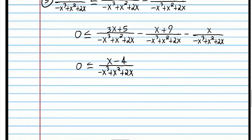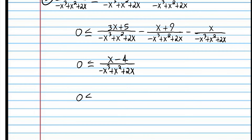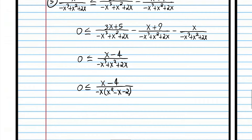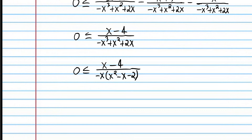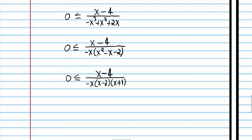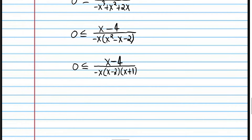That was step two — we combined everything to one fraction. Now let's go to step three: we're going to factor out negative x, and we have x squared minus x minus 2 to factor. We factor the GCF — the negative x — and then factor the orange quadratic. Now we're ready to make a sign chart.